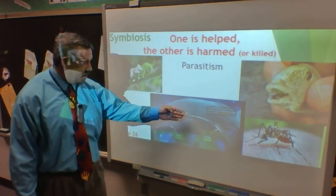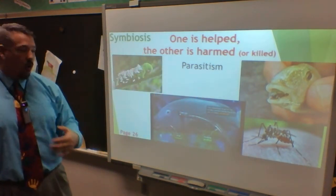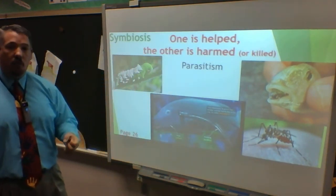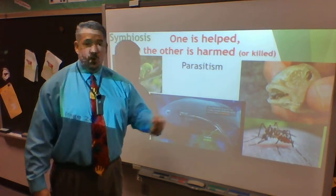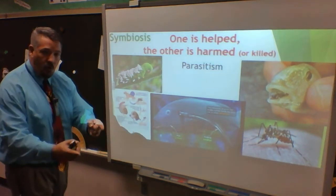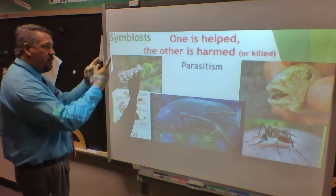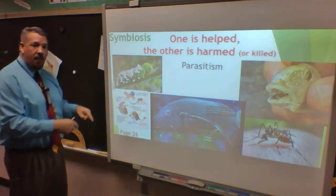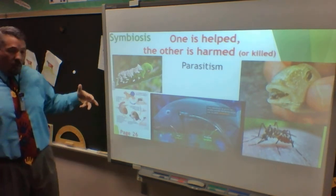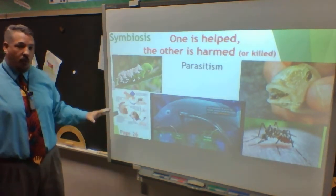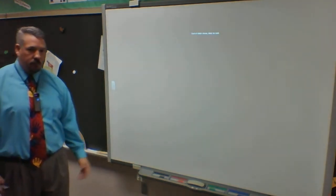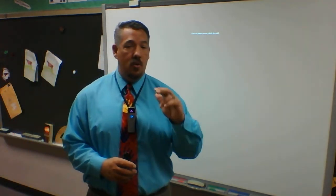Mosquitoes work the same way — they land on an organism like you, a dog, or a cat, insert their long nose, and pull out blood. They also carry disease: they land on an organism that has heartworm, carry the eggs inside their body, and when they get blood from another organism, they drop the eggs inside that new host. Those heartworm larvae grow and move into the heart — that's why we feed our animals medicine to get rid of heartworm and pass them from their bodies. That's the end of our lesson.